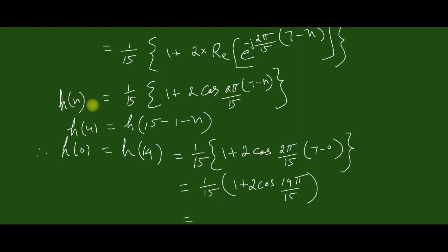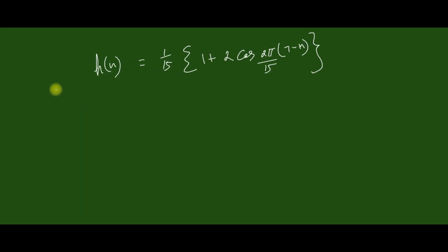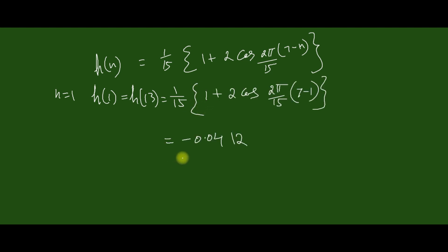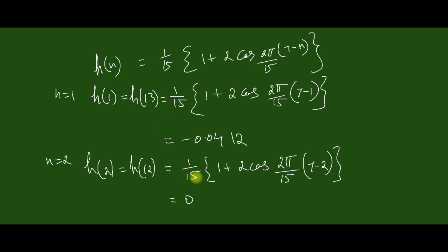By symmetry, h(n) equals h(15 minus 1 minus n), so h(14 minus n). Substituting for n=0: h(0) equals h(14), computed as minus 0.06375. For n=1: h(1) equals h(13) equals (1/15) times the expression, computed as minus 0.412. For n=2: h(2) equals h(12), substituting and computing, h(2) equals h(12) equals 0.